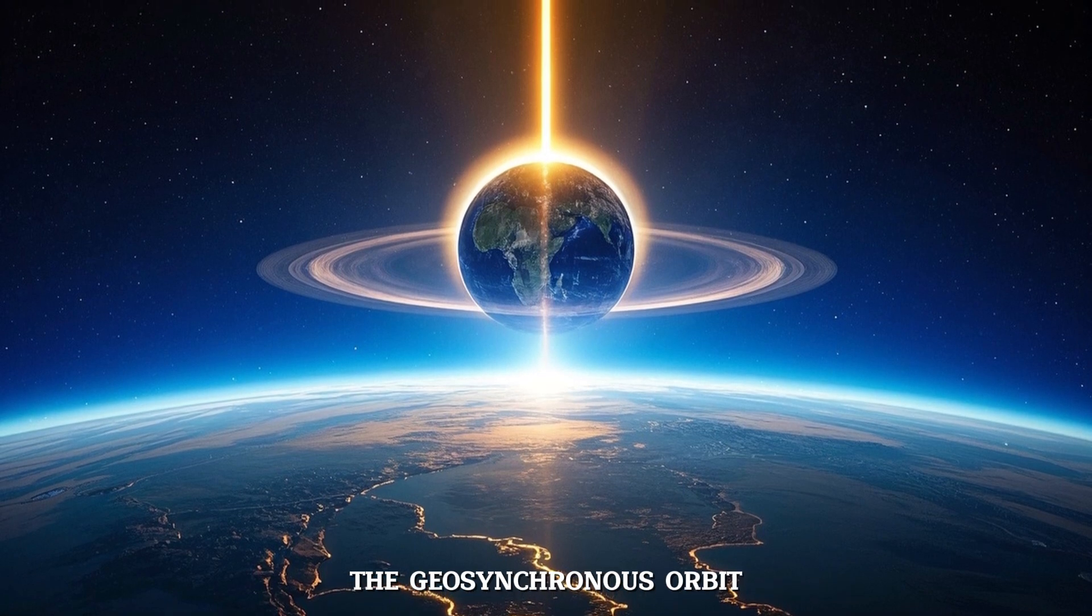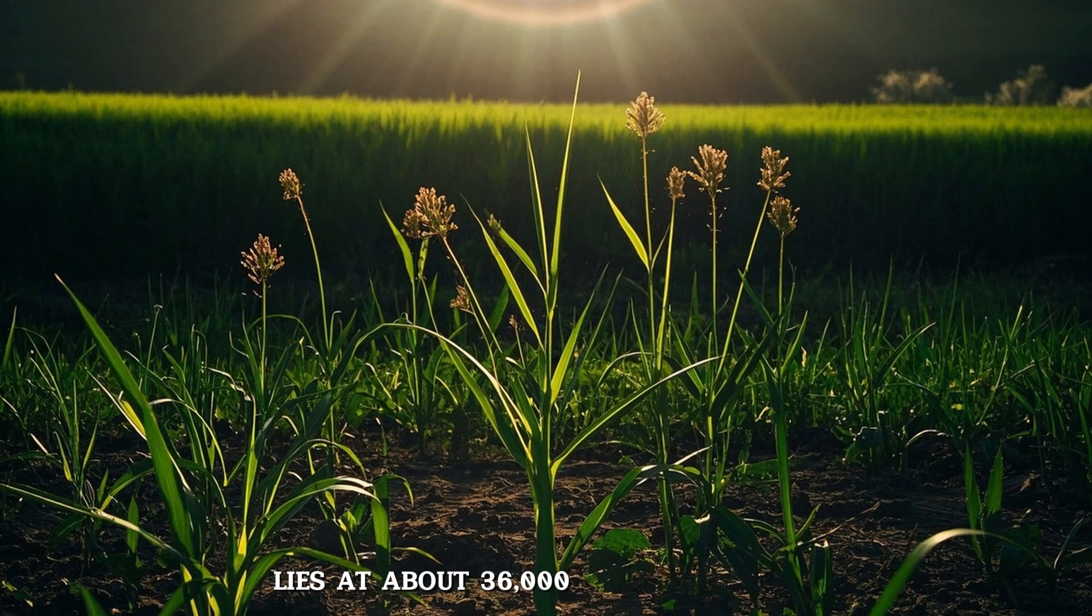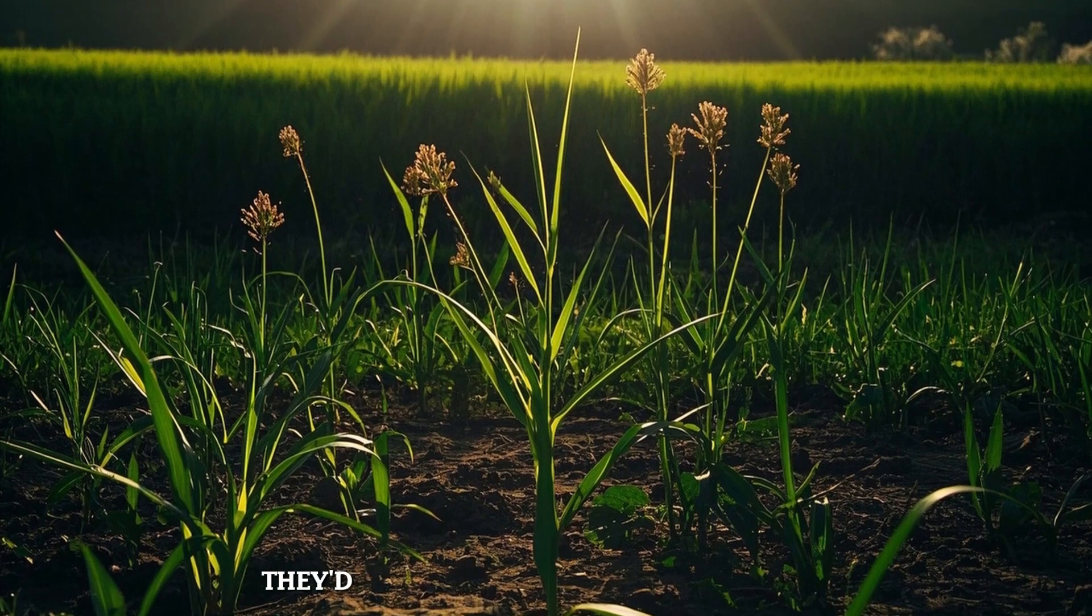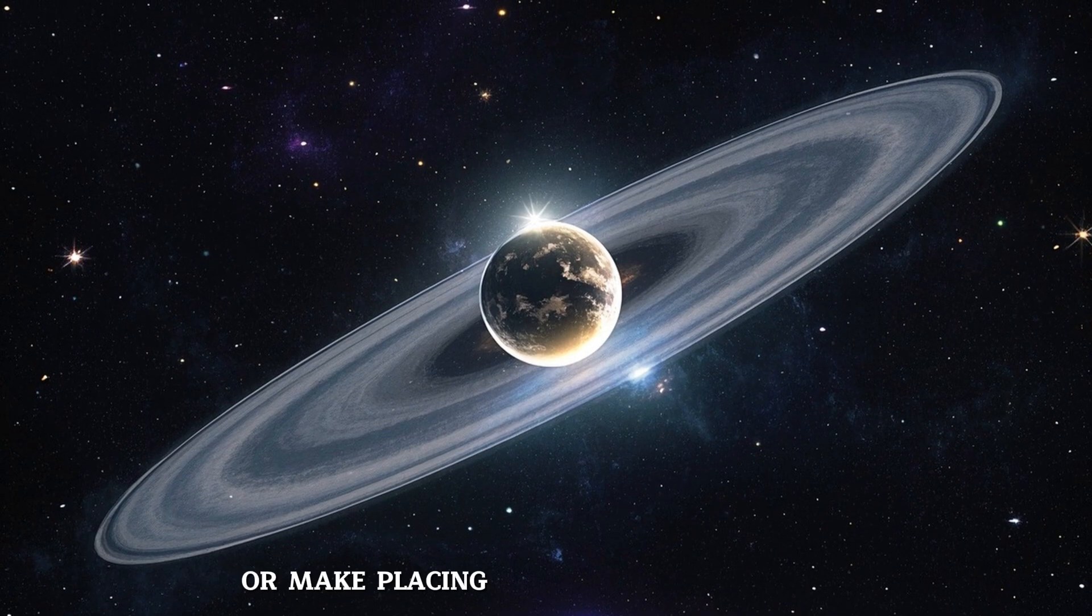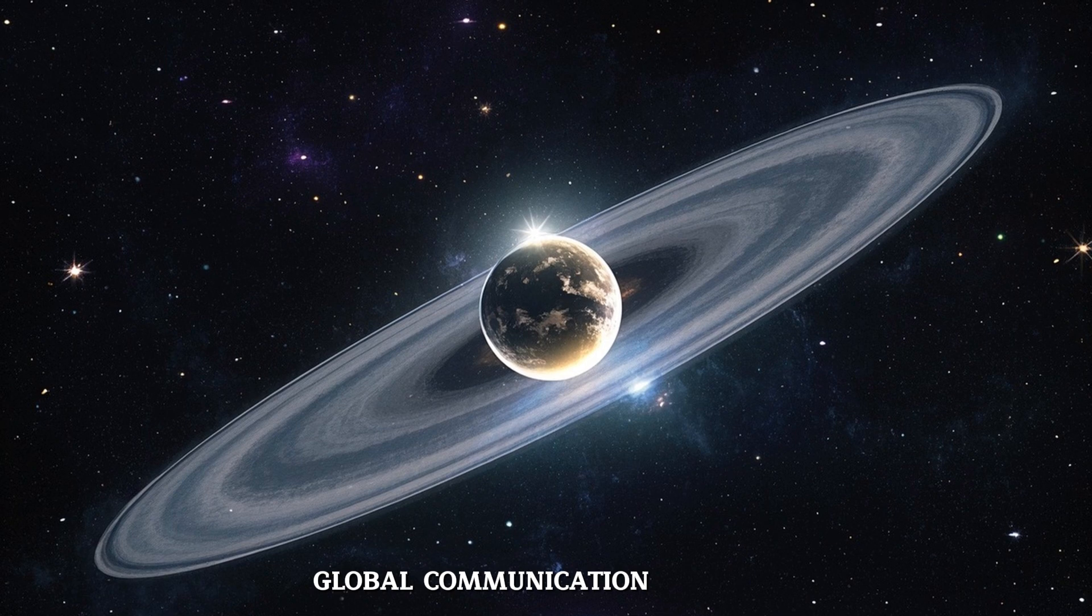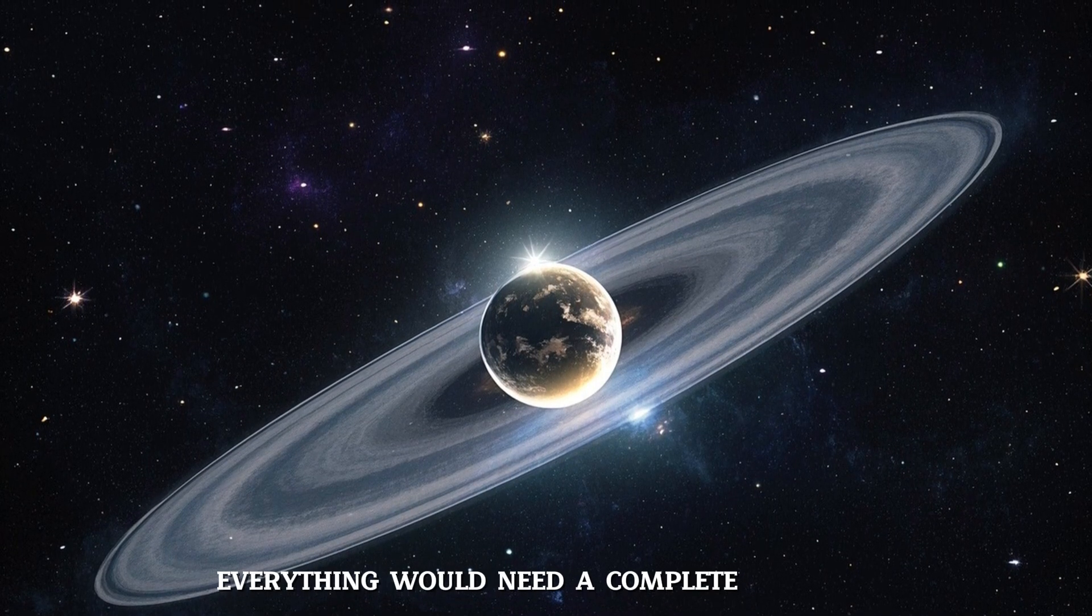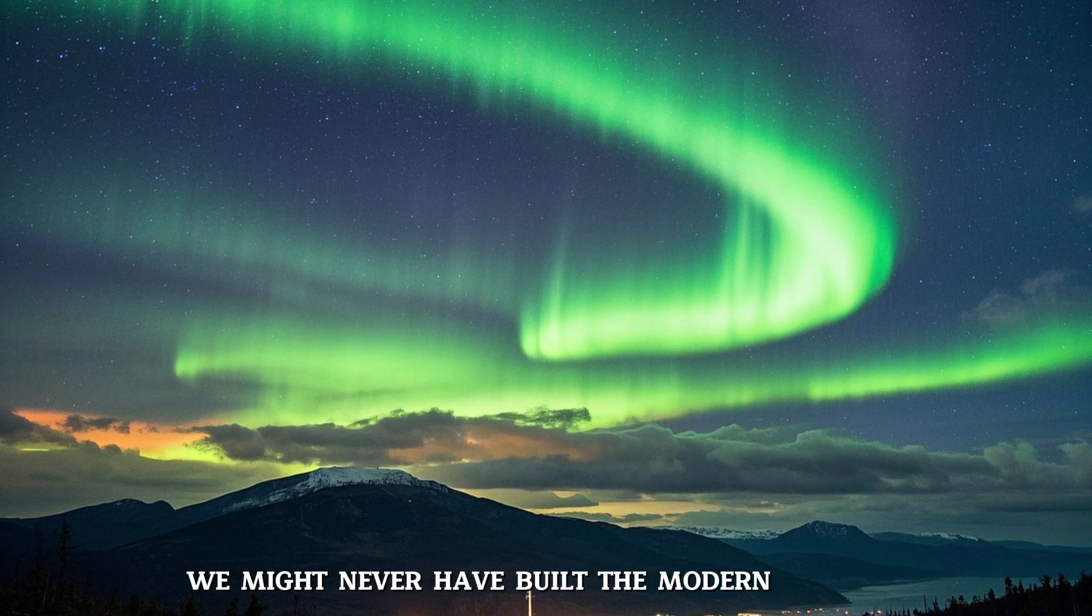The geosynchronous orbit used by communication satellites lies at about 36,000 kilometers above Earth. If the rings were located in that region, they'd either obliterate the satellites or make placing them nearly impossible. Global communication systems, weather tracking, GPS, everything would need a complete redesign. We might never have built the modern internet.